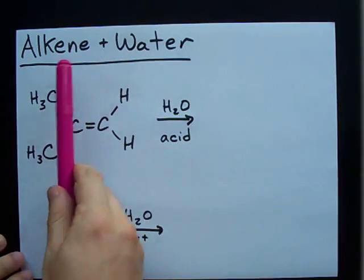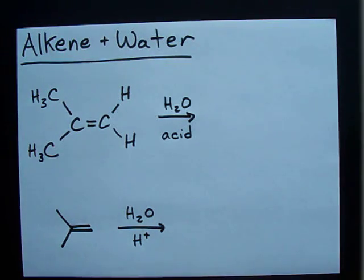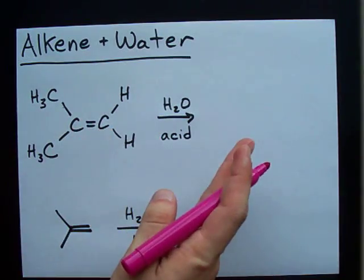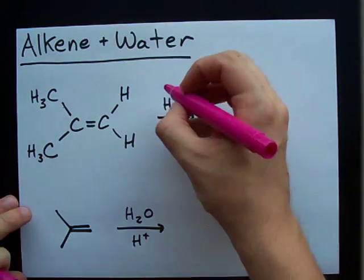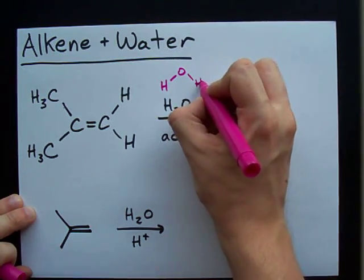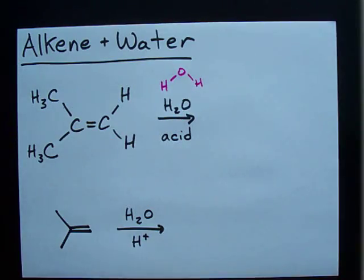Like what happens when you mix water with alkenes in acidic solution with a little bit of heat? Well, what happens is that the double bond of the alkene breaks open and the water, which as you know comes as an H and an OH attached to each other, that breaks open. OH attaches to one side, H attaches to the other.